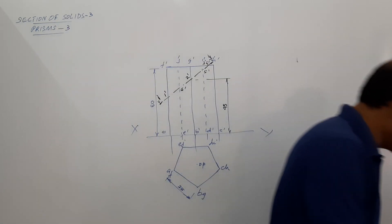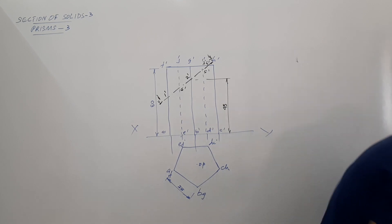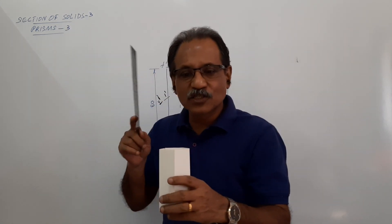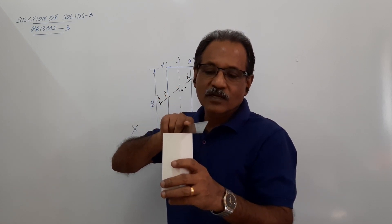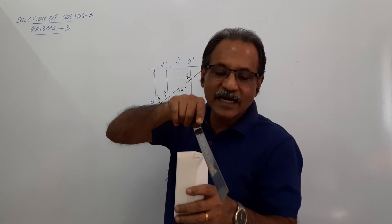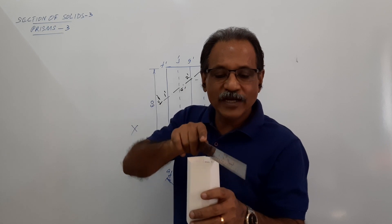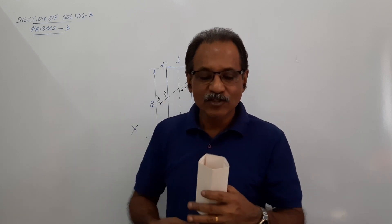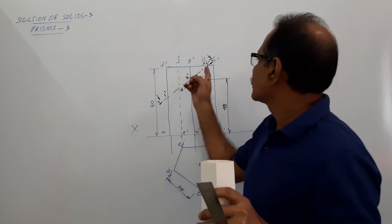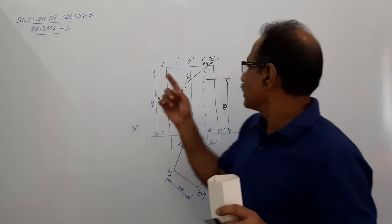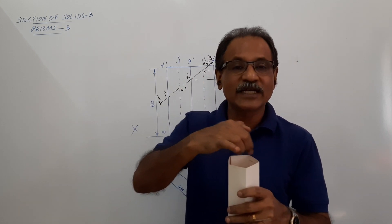How do you get 2 points at the same marking? If you cut this by a cutting plane like this, you will have 1 point at that edge and 1 point on this edge — 1 point there and 1 point here. In the elevation they coincide. So this has got 3' and this has got 4'. In the elevation, 3' and 4' coincide. 1 is on GH and the other is on HI.